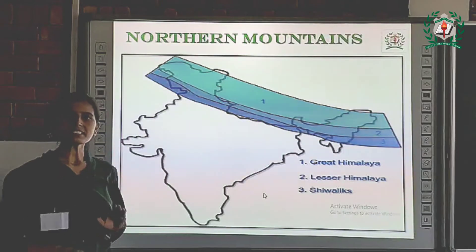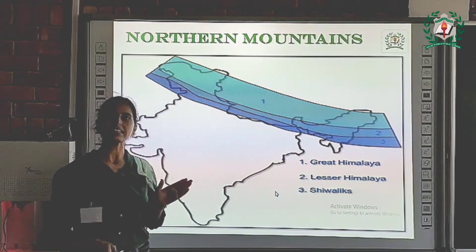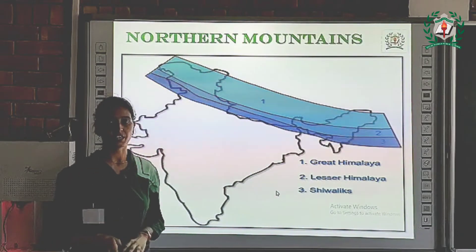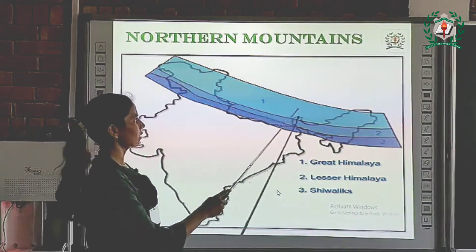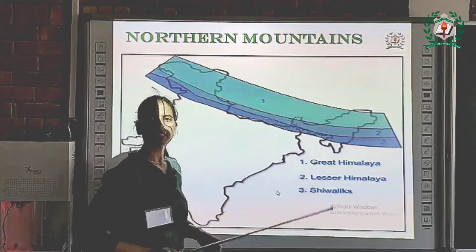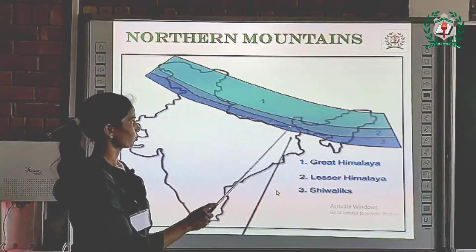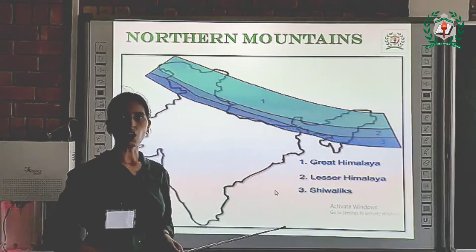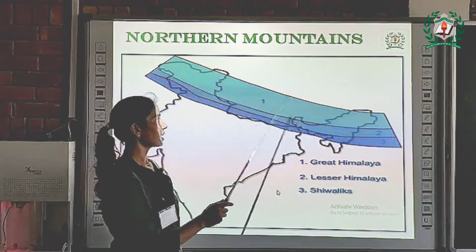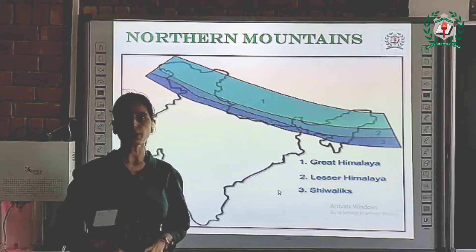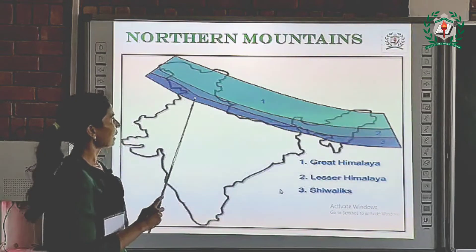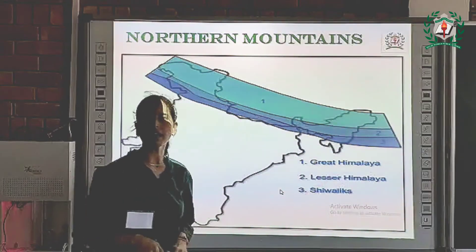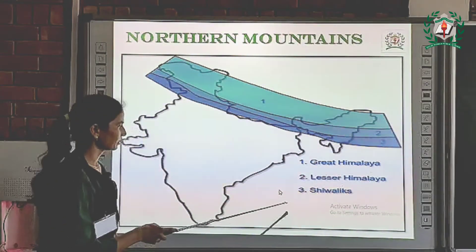As we have studied in this chapter, there are three ranges in the Himalayan range. These are: number one, Greater Himalayas, also known as Himadri; number two, Lesser Himalayas or Himachal; and the third is Lower Himalayas or Shivalik.